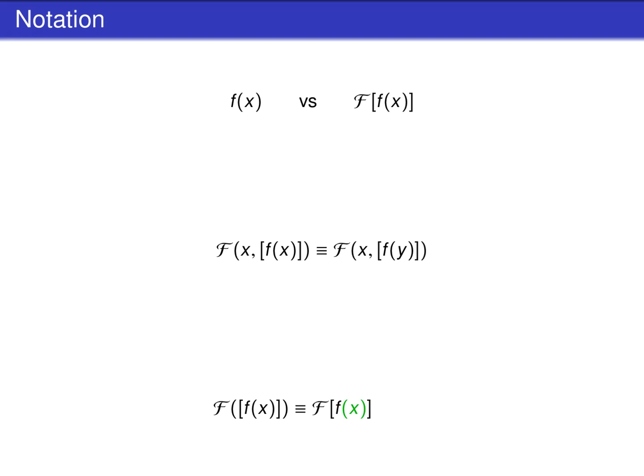One can also omit the argument of the function in the argument of the functional. This leads to an even shorter notation, where only the symbol for the function is written in the argument of the functional.